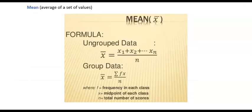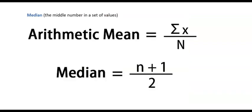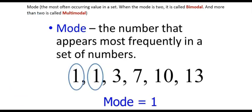Central tendency deals with mean — which is the average of a set of values — also median, which is the middle number in a set of values, and mode, which is the number that appears most frequently in a given set. When there are two modes it's called bimodal, and when there are more than two modes it is called multimodal.